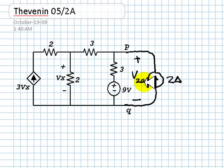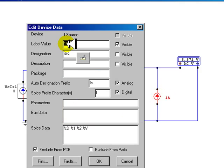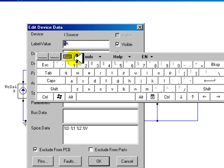Again, I will use CircuitMaker to do that. Let me modify this 1-Amp current source. Now, it should be a 2-Amp current source.